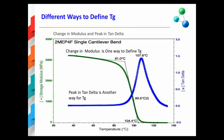A quantitative and reproducible value for the temperature at which E prime begins to decrease can definitely be determined from the analysis shown on this slide. The analysis involves fitting E prime data to two lines before the transition, during the transition, and after the transition, and determining the intersection points of the various lines.